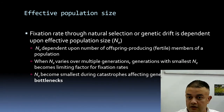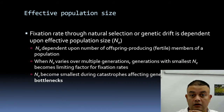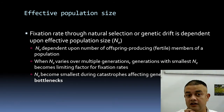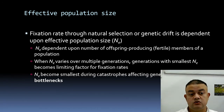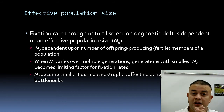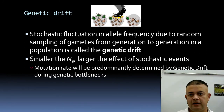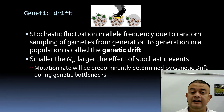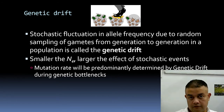When Ne varies across multiple generations, the generation with the smallest Ne becomes the limiting factor for fixation rates — both for natural selection and for genetic drift. Ne becomes smallest during catastrophes affecting genetic diversity — this is what we call genetic bottleneck situations. During genetic bottlenecks like an asteroid impact, Ne becomes very small and drift plays a major role. Genetic drift is defined as the stochastic fixation of allele frequency due to random sampling of gametes from generation to generation.